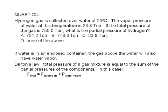Dalton's law tells us that the total pressure of a gas mixture is equal to the sum of the partial pressures of the components. Partial pressure refers to the pressure that a component would exert if it were alone in the container.